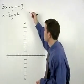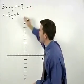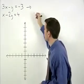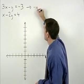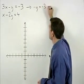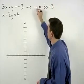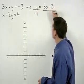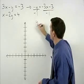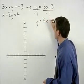For our first equation, we would subtract 3x from both sides to get negative y equals negative 3x minus 3. Divide both sides by negative 1 and y equals 3x plus 3.